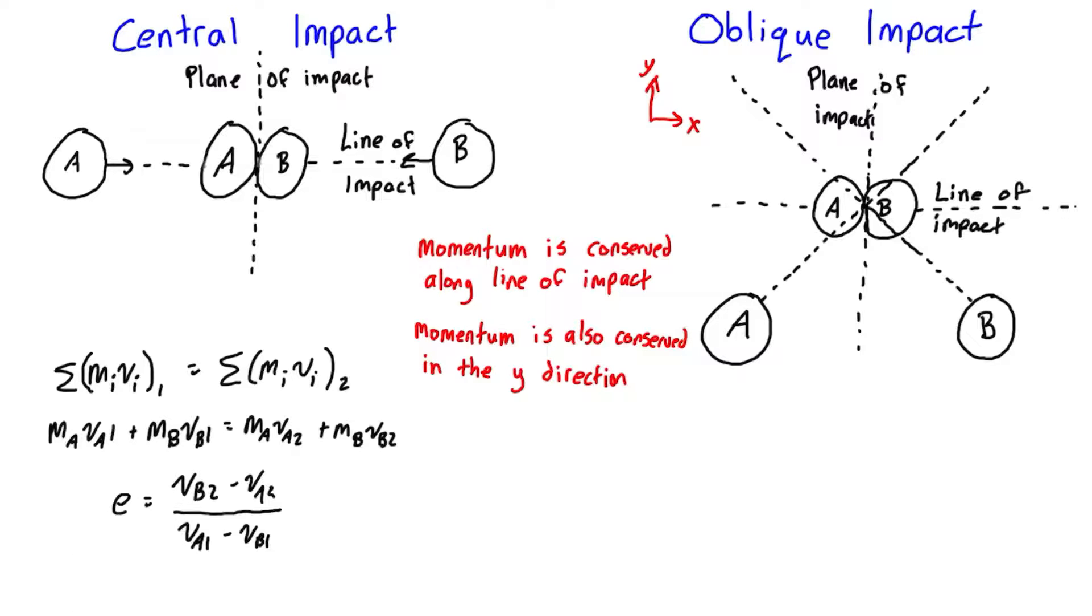For oblique impact problems we actually have four unknowns. Typically we'll be given the initial velocity of A and B, which you can break down into the x and y components, but then we'll be looking for the x and y component of the velocity of A, that's two unknowns, and the x and y component of the velocity of B, which is two unknowns.